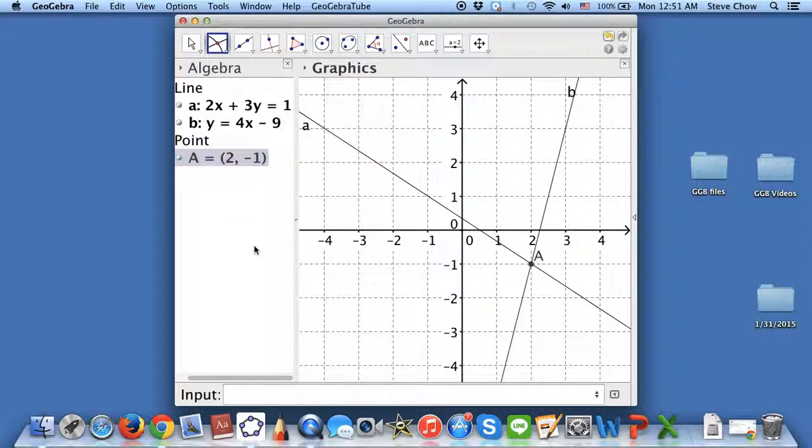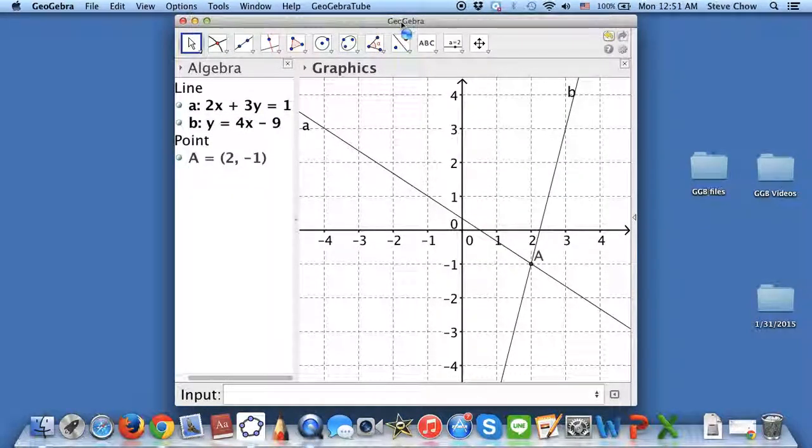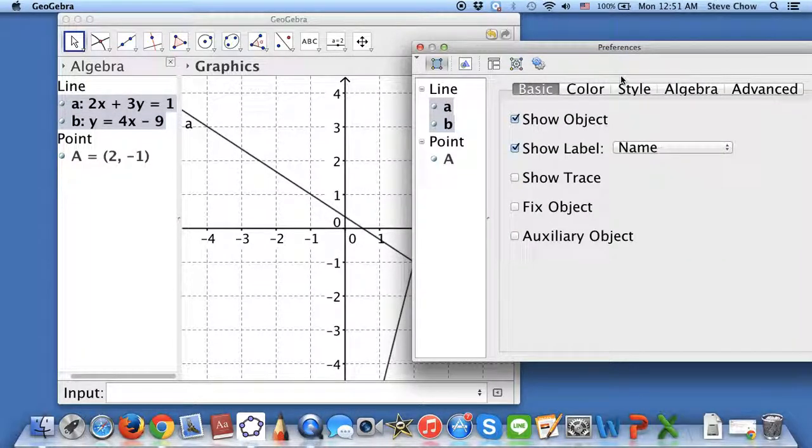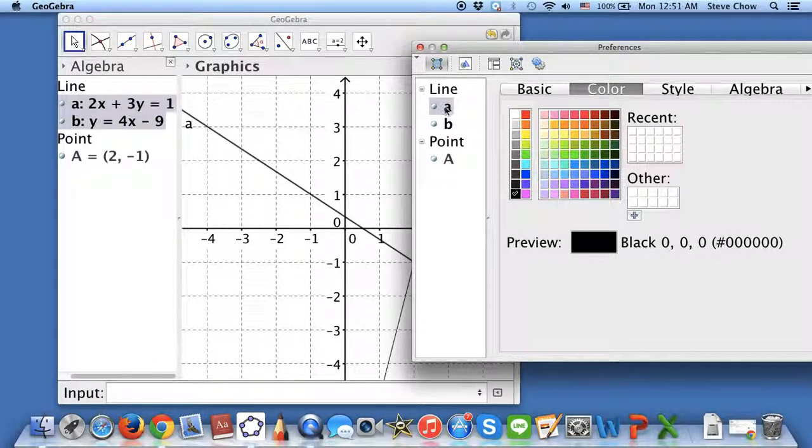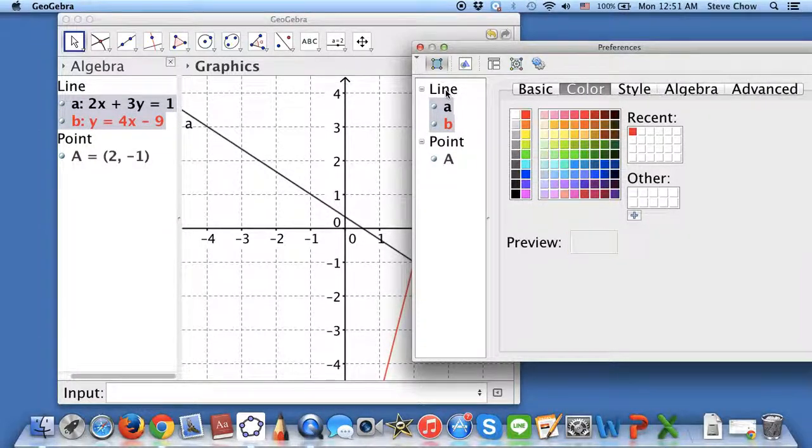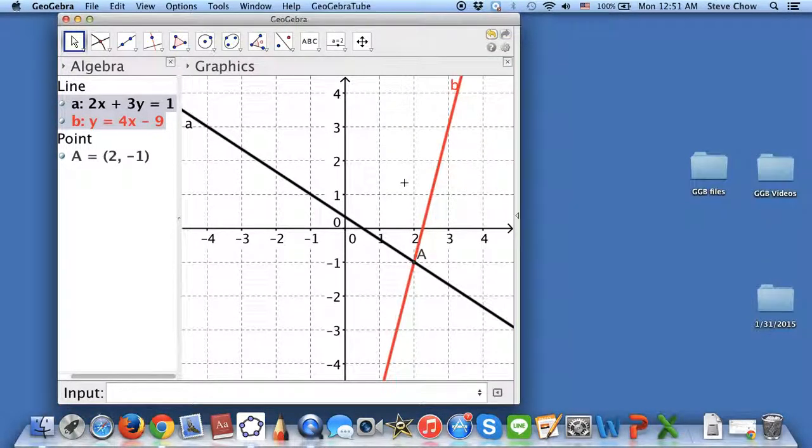Let me maybe just change this real quick to make it prettier, as I usually like to do. Let me go to color. Let me say a is black and then b is in red. Both of the lines I want to make thicker. Now it looks prettier.